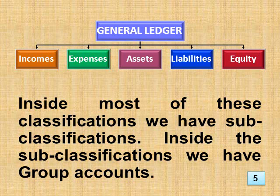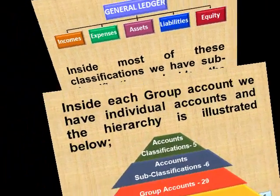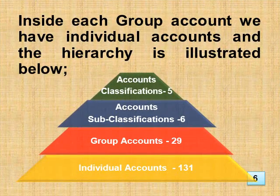Inside the subclassifications we have group accounts. Inside each group account we have individual accounts, and the hierarchy is illustrated below. We have 5 account classifications, 6 subclassifications, 30 group accounts, plus 131 individual accounts.